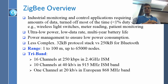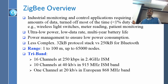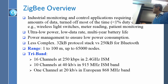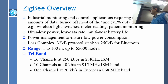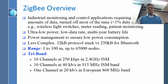Zigbee goes to 100 meters and supports up to 65,000 nodes. It runs in three different license-exempt ISM bands: 2.4 GHz, 915 MHz, and 868 MHz in Europe. The 2.4 GHz band is the same as Bluetooth, but Zigbee has the additional 915 MHz band. There is a small band available and they can do up to 40 kilobits per second.